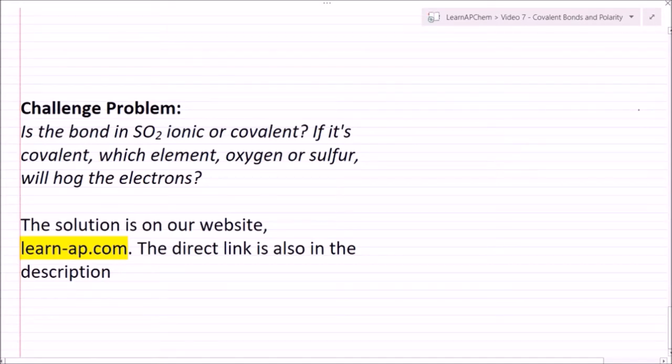All right, so that brings me to today's challenge problem. Is the bond in SO2 ionic or covalent? And if it is covalent, which element—oxygen or sulfur—will be hogging the electrons? The solution to this problem is on our website, learn-ap.com. I'll also include a direct link in the description.